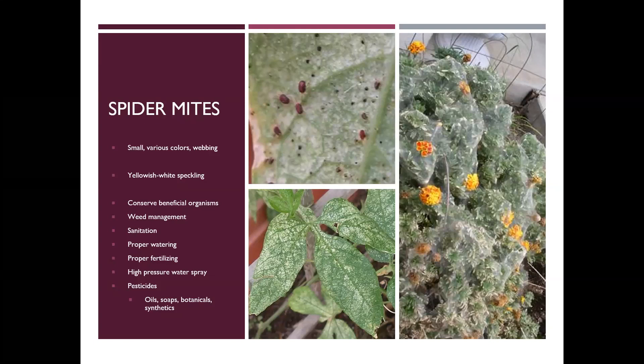As the population continues to grow, they will expand the webbing to cover more parts of the plant. They'll move on from the underside of the leaf and start covering sections. And if you just let them go — like my neighbor years ago did — they will cover the whole plant, and it gets to this stage where you really just need to rip those plants out.